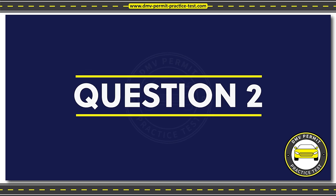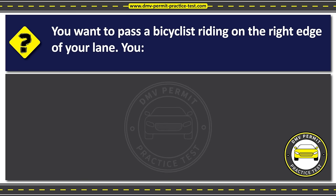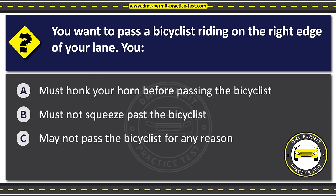Question two. You want to pass a bicyclist riding on the right edge of your lane. Option A: Must honk your horn before passing the bicyclist. Option B: Must not squeeze past the bicyclist. Option C: May not pass the bicyclist for any reason. The correct answer is Option B: Must not squeeze past the bicyclist.